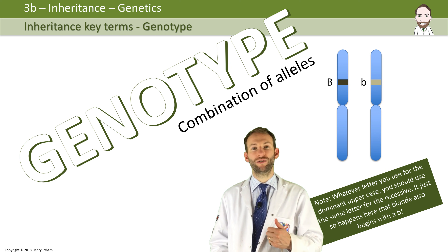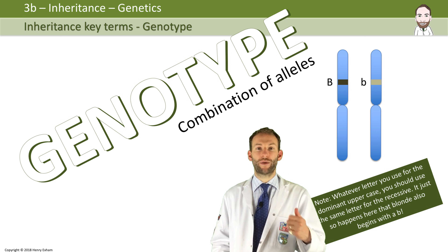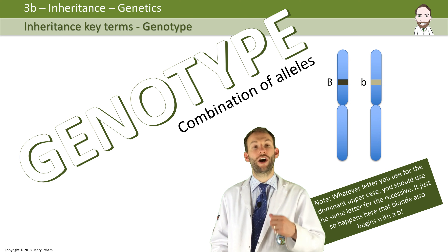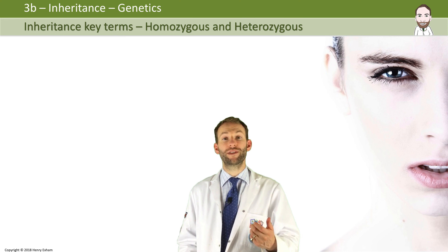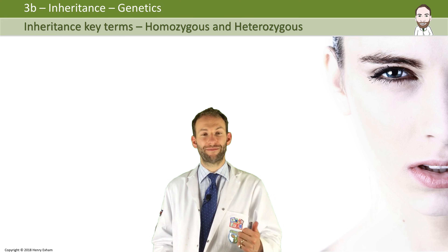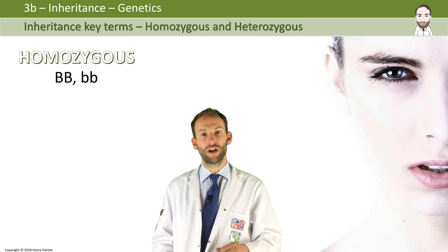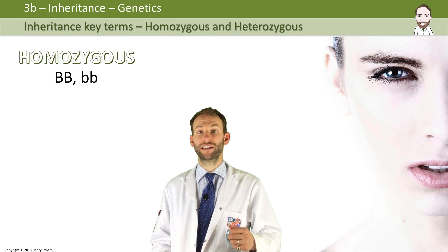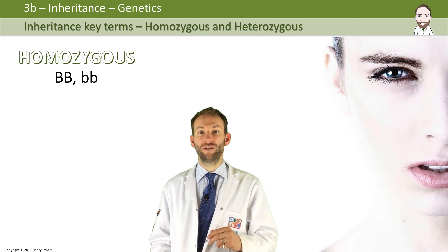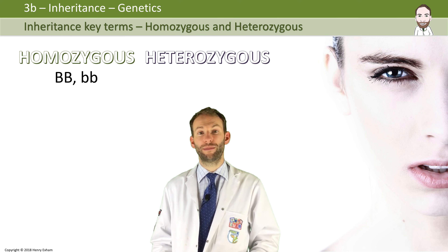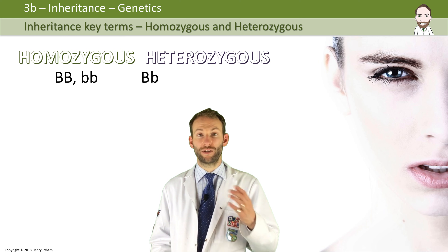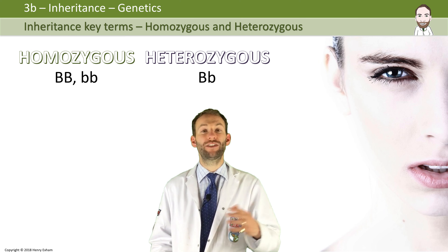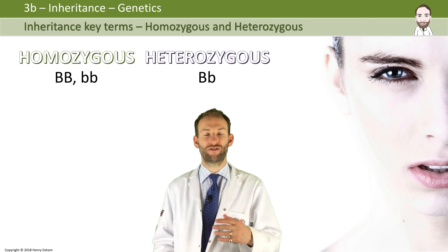If someone has two of the same alleles that make up their genotype, we say they are homozygous. So you could be homozygous dominant — big B, big B, brown and brown — or homozygous recessive — blonde, blonde. If you have one of each allele, like I do for my hair colour, then we call that heterozygous. So it would be big B, little b — that would be heterozygous.